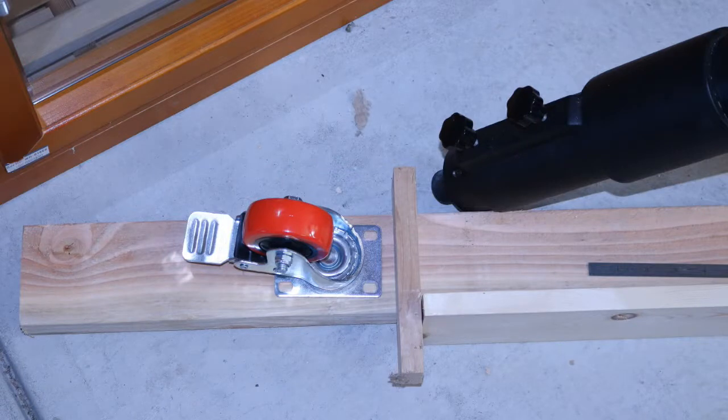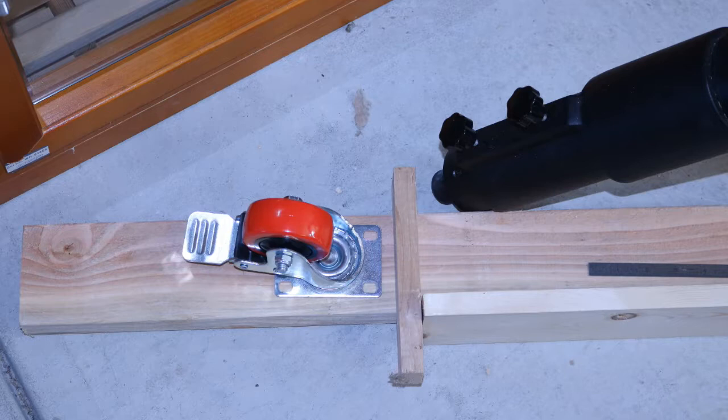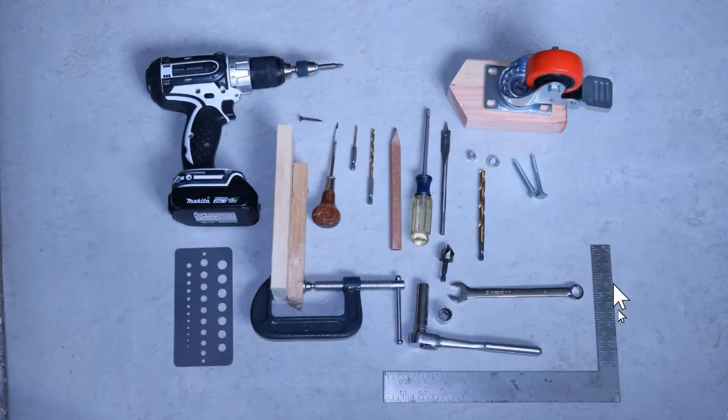When you're laying out the 1x2 directly across the 2x4 prior to measuring and cutting it, you want to make sure it's exactly perpendicular to the 2x4, and you'll use the square, the carpenter's square, to do that.